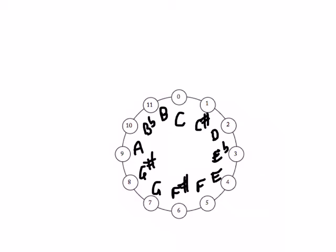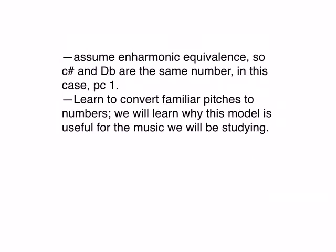The more practice you have with these, the easier it will be for you to learn and use them. So we'll assume enharmonic equivalents, C sharp and D flat are the same number, pitch class 1. And we'll be converting our familiar pitches to numbers, and we'll see why this is so useful for the music that we're studying.